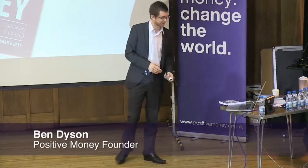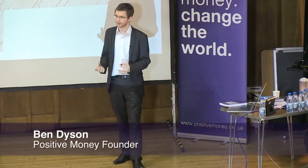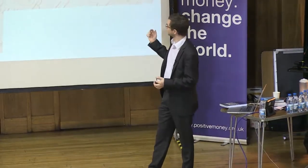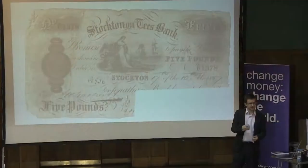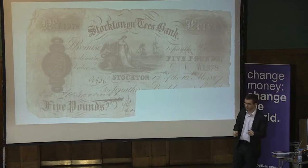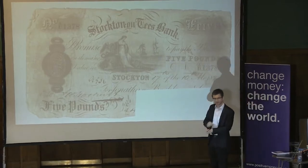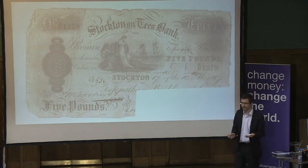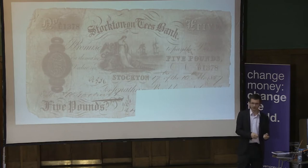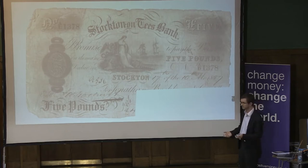Let's start at the beginning. Back in the 1800s through to the 1840s, banks had the ability to create money. The way they did this was through printing pieces of paper. When you put your coins into the bank, they give you a receipt, and that receipt would say you've deposited five pounds. Because it was more convenient to carry bits of paper around than to carry metal coins, people used to use the pieces of paper as though they were money.